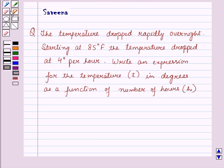Hello and welcome to the session. In this session we will discuss a question which says that the temperature dropped rapidly overnight, starting at 85 degrees Fahrenheit, the temperature dropped at 4 degrees per hour. Write an expression for the temperature T in degrees as a function of number of hours H.